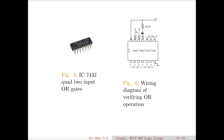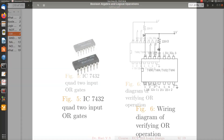If you connect inputs A and B — if you short these two terminals and connect to ground, the output will be low and this LED will glow, because current flows through the LED. Now if I connect as 0,1 — like B connected to high and A to ground — then the output will be high, no current flows, and the LED will not glow. Likewise for A=1, B=0, and for A=B=1, the output will be high and the LED will not glow. This way you can verify the OR gate truth table.